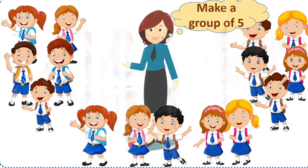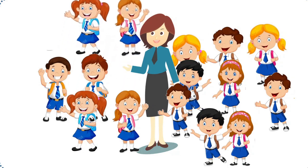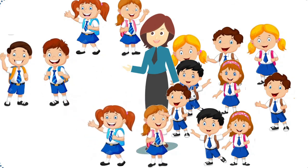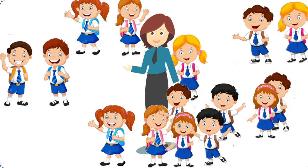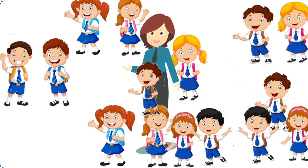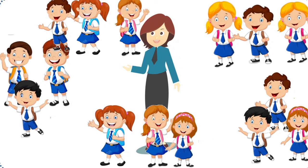Again the teacher said, 'Now make a group of three' — we will go upstairs to the laboratory, so make a group of three. We will see how they do it. Two joined, she joined and this group became three. Now these two here, and these two this side. We can see groups of three — five groups in total, each group has three children.